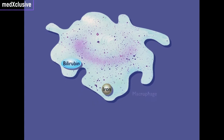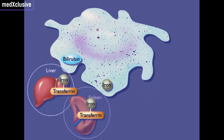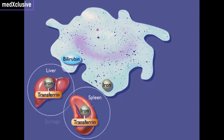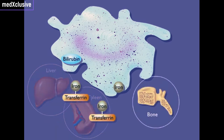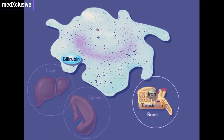Iron is transported by transferrin in the blood to various tissues for storage or to red bone marrow for making new hemoglobin.